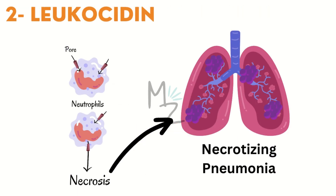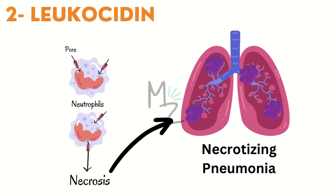The second exotoxin is leukocidin. This toxin forms pores in white blood cells — for example, neutrophils — leading to ion influx and efflux. This causes necrosis of the leukocytes (white blood cells). When white blood cells die, it leads to massive inflammation.